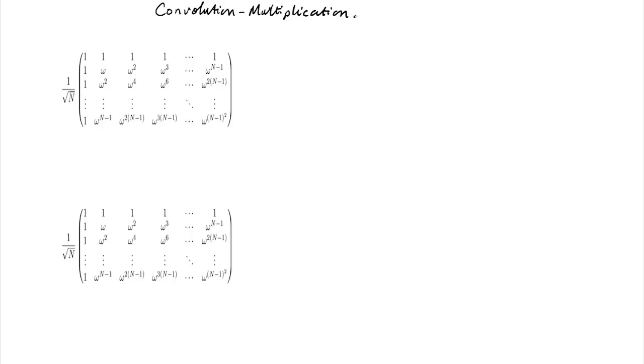The Fourier transform has two very beautiful properties that are used in quantum algorithms. The first property is one that you probably know as the convolution-multiplication property of a Fourier transform.